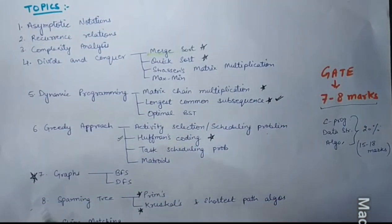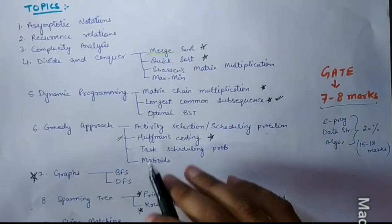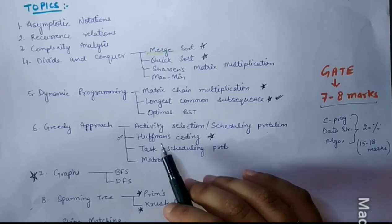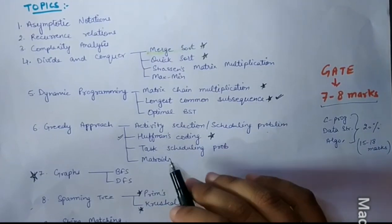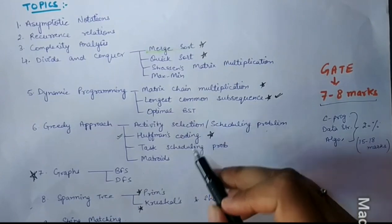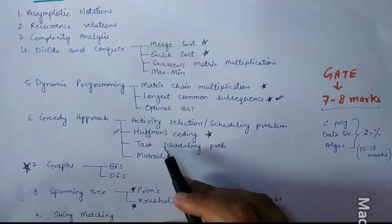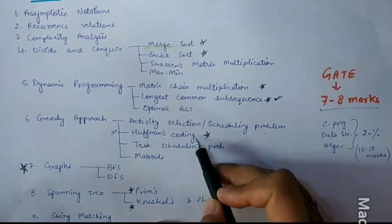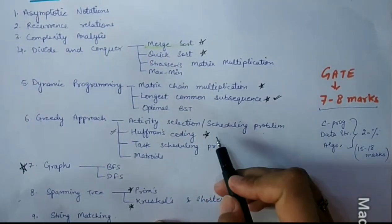Next topic is Greedy Approach. In Greedy Approach, we have Activity Selection and Scheduling Problem, Huffman Coding, Task Scheduling Problem and Matroids. Huffman Coding is again numerical-based problem. Task Scheduling Problem and Matroids are also important topics. But Huffman Coding is a numerical-based problem which we have to do well.